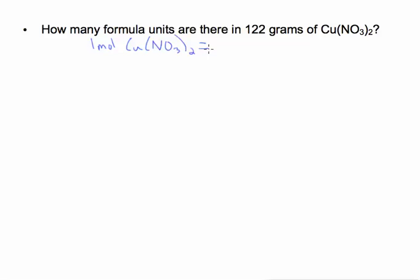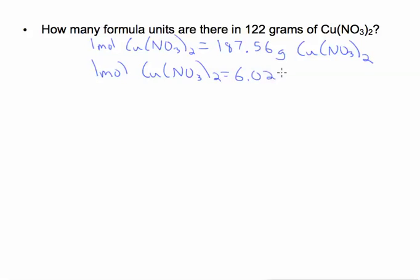we get the molar mass at 187.56 grams of Cu(NO3)2. And we also know that one mole equals Avogadro's number of formula units. We know to use formula units because that's what the problem says.